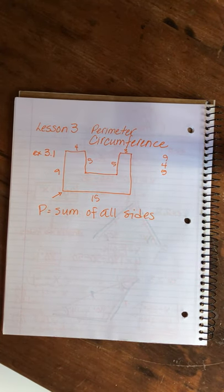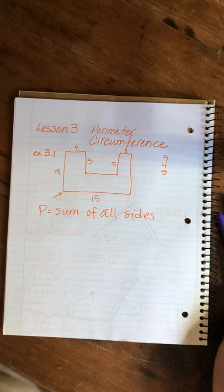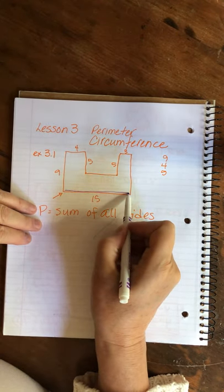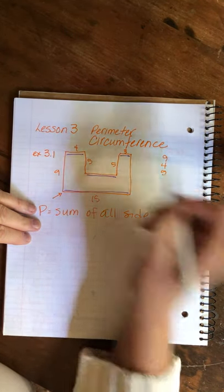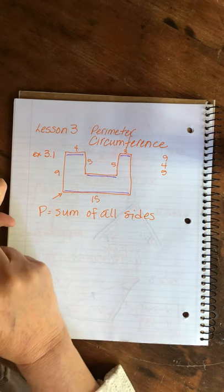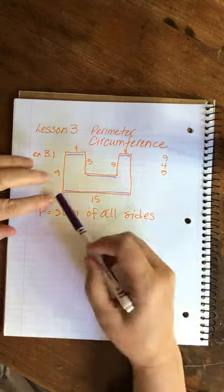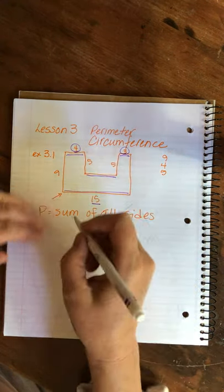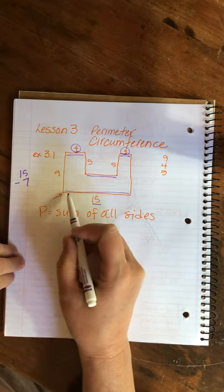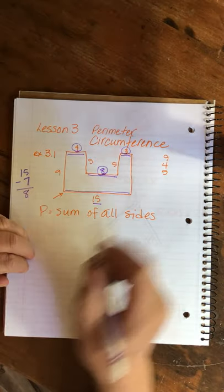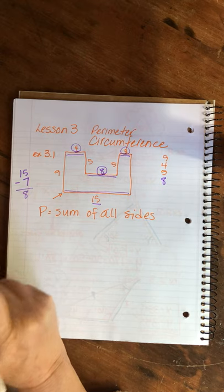How do we know how long this side is if there's no number? John does this to us all the time, but there is a super easy way to figure it out — we just apply a little logic. We know all of these are right angles, so this length has to equal those three pieces added together, because this side is equal to that side — it's just broken up. That's why it's important to know that all sides have right angles: everything's square and perfect.